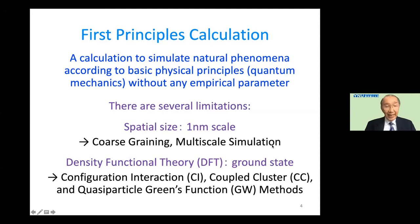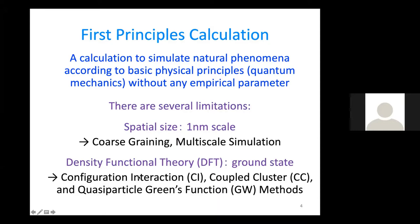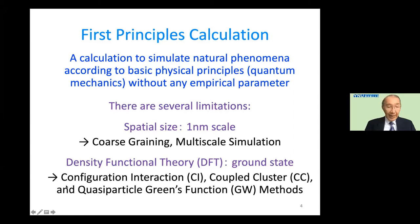In addition to the size limitation, density functional theory (DFT), which is used by most researchers, is limited to ground state properties only. In order to study excited states of electronic states, it is necessary to go beyond DFT. One can use quantum chemistry methods such as configuration interaction (CI) or coupled cluster theory (CC), or alternatively solid state physics methods such as the quasi-particle Green's function method, like the GW method.